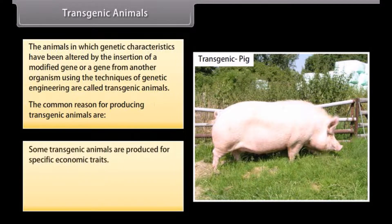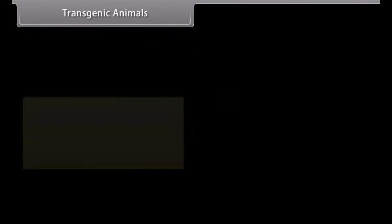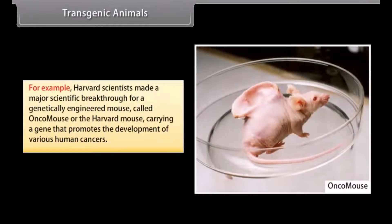Some transgenic animals are produced for specific economic traits. For example, transgenic cattle were created to produce milk containing particular human proteins that may help in the treatment of human emphysema. Harvard scientists also made a major scientific breakthrough with a genetically engineered mouse called the Oncomouse, or Harvard mouse, carrying a gene that promotes the development of various human cancers.